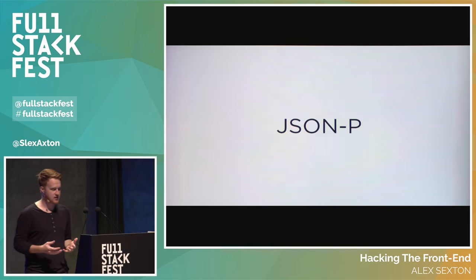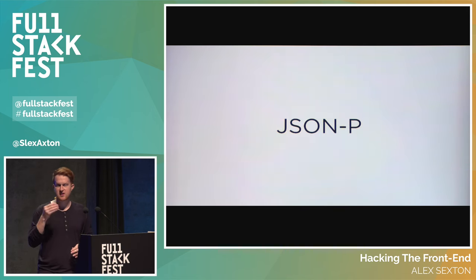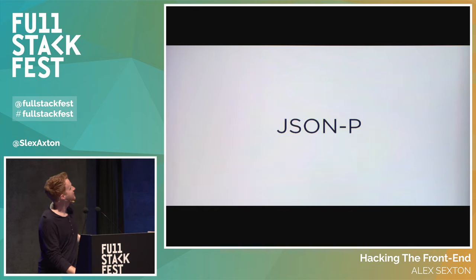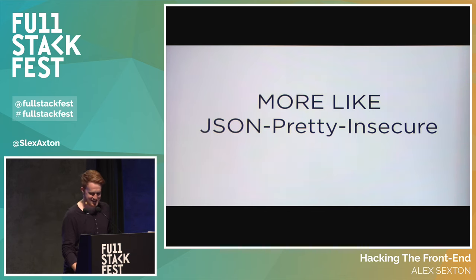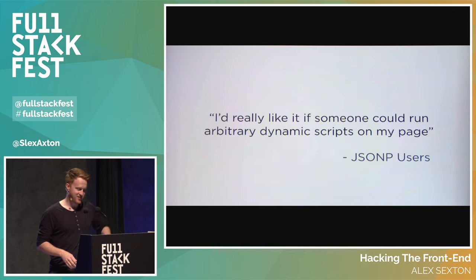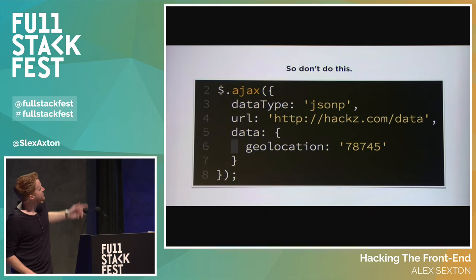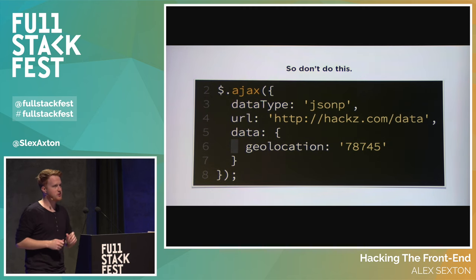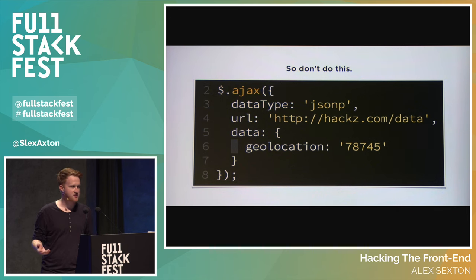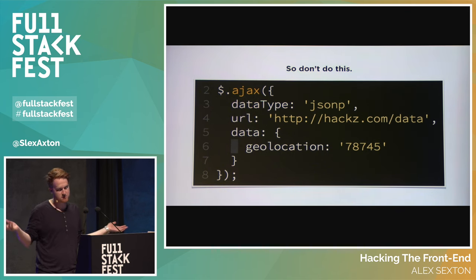JSONP — JSON with Padding. I like to call it JSON Pretty Insecure. Essentially, 'I'd really like it if someone could run arbitrary dynamic scripts on my page' — I'm a JSONP user. Whenever you do a JSONP request, it feels like Ajax, like you're doing a request to a different thing, but really all that happens is you inject a script on your page. The content can have dynamic data that comes back — that's the cross-domain hack that helped the web grow, but you're allowing someone to run arbitrary dynamic code on your page.